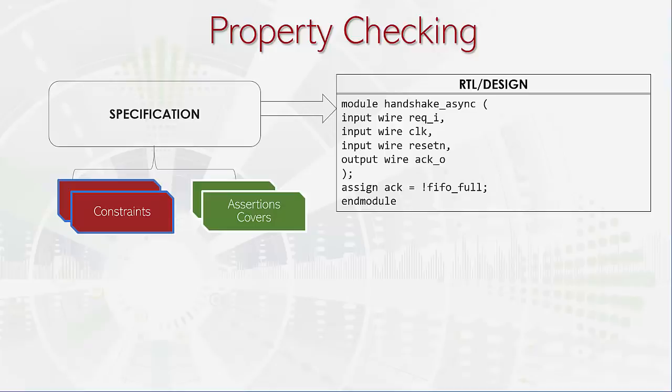Covers, on the other hand, describe a scenario where we may want to say that every request is followed by a grant - okay, that's an assertion. And in the cover sense, we could say, is it possible to see a grant at all in response to a request? Covers and assertions are ways to find bugs.